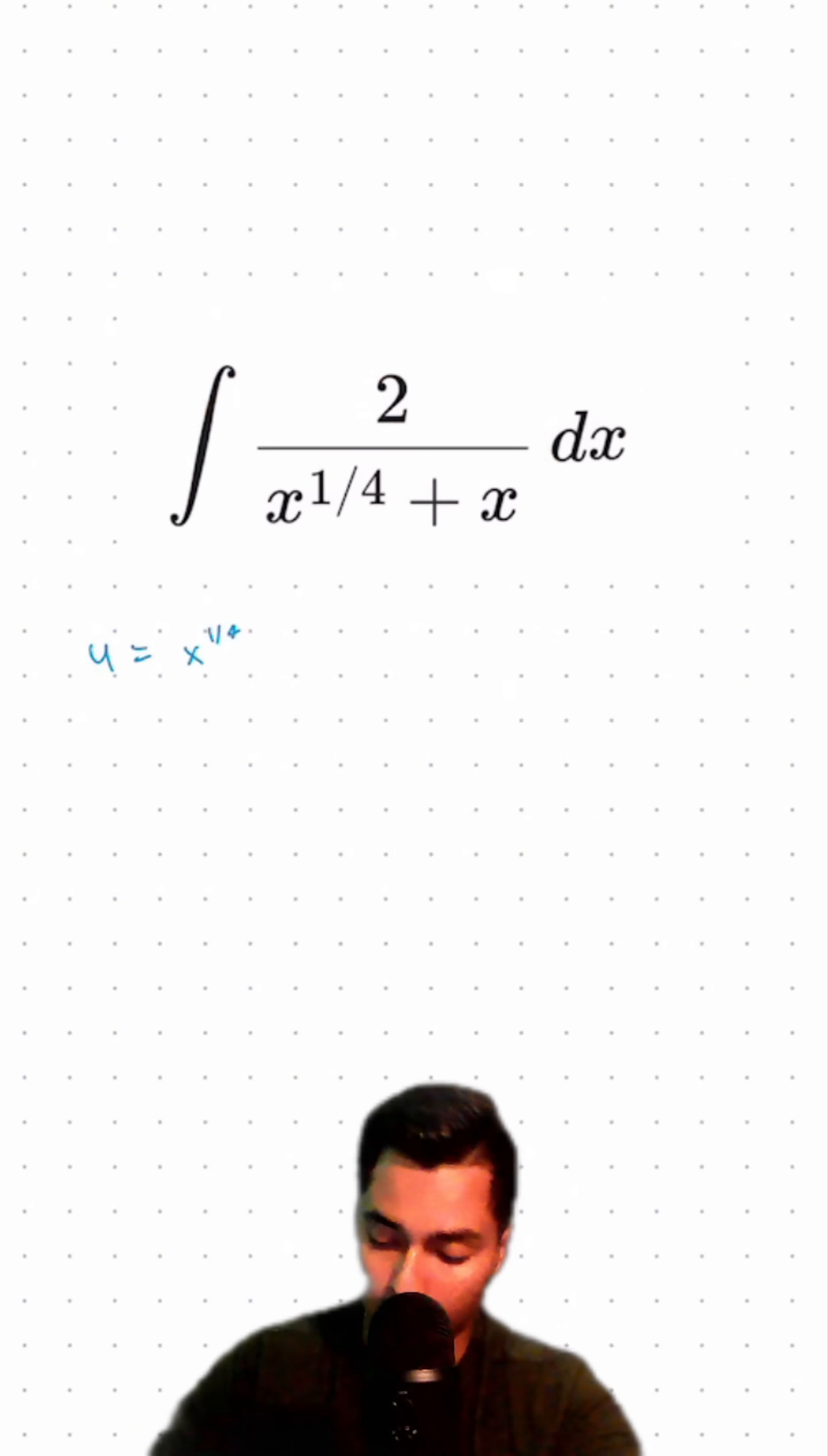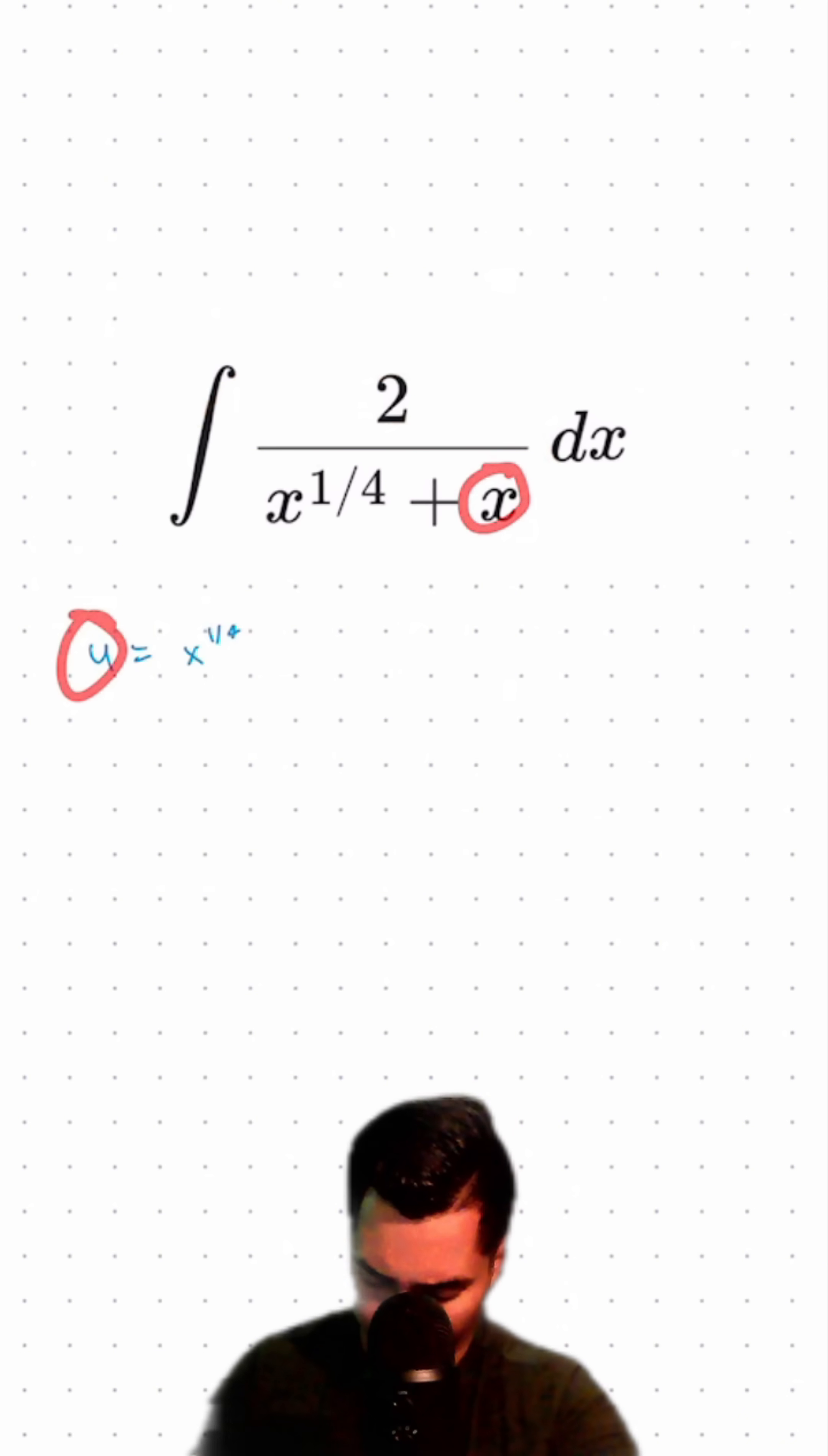Rather than doing our typical derivative of u, I'm going to solve for x here. Namely, u to the 4th power equals x, and we'll solve for dx from here.